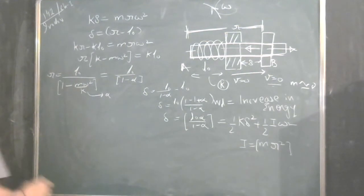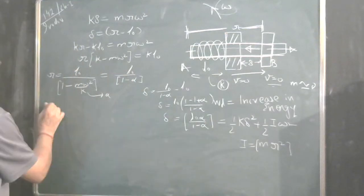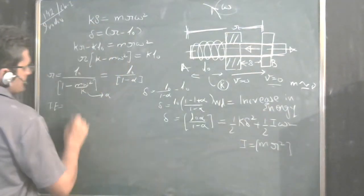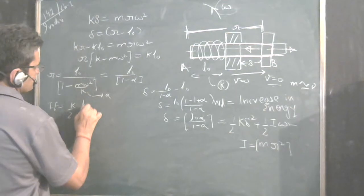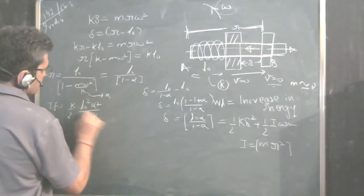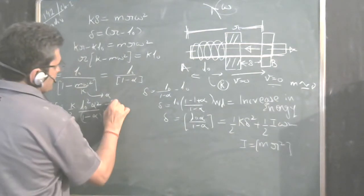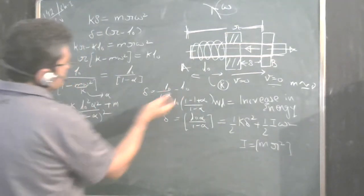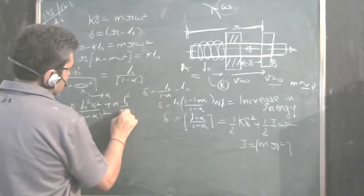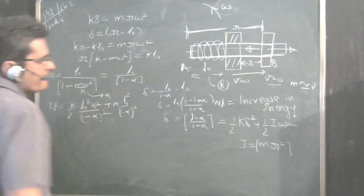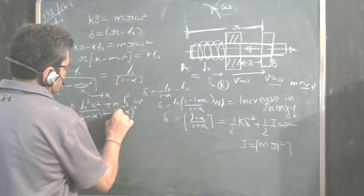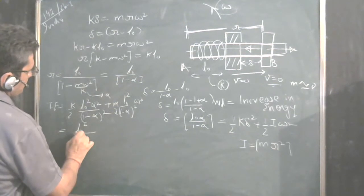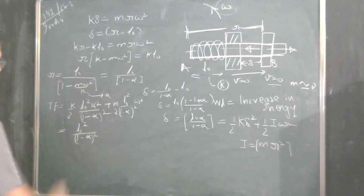Now we know r and delta, so we can find the total energy — which is also the work done to achieve this state. The total energy equals the spring PE plus rotational KE: half·k·delta squared plus half·m·r²·ω². Substituting delta equals L0·alpha/(1 minus alpha) and r equals L0/(1 minus alpha), we get: half·k·[L0·alpha/(1 minus alpha)]² plus half·m·[L0/(1 minus alpha)]²·ω². Take L0² divided by (1 minus alpha)² and the factor of one-half as common.